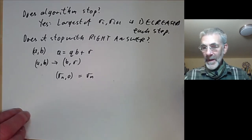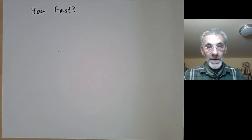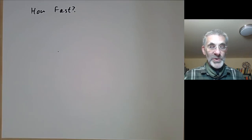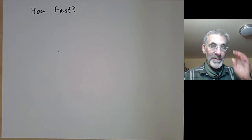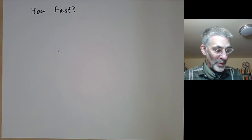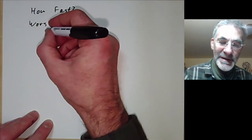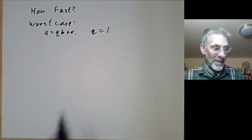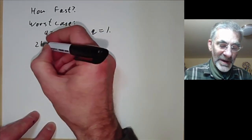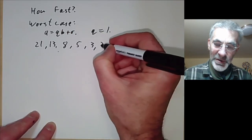How fast is it? Analysing this rigorously is quite tricky — it's a classic warm-up example for people who study algorithm speed. Let's look at the worst case: the numbers decrease as slowly as possible, which happens when q = 1 at each step. For example, finding GCD(21, 13) might go: 21, 13, 8, 5, 3, 2, 1, 1, 0 — each step you only subtract one copy of each number from the previous one.